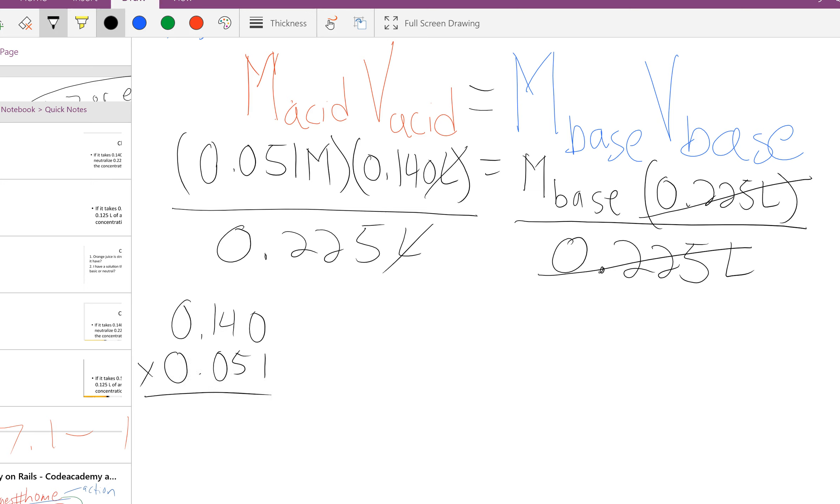0.140 times 0.051. When I multiply those together, I get 1 times 0 is 0, 1 times 4 is 4, 1 times 1 is 1, 5 times 0 is 0, 5 times 4 is 20, 5 times 1 is 5 plus 2 is 7.